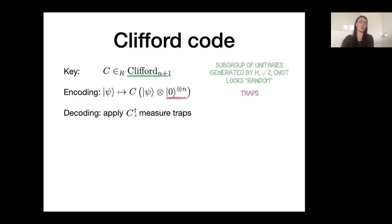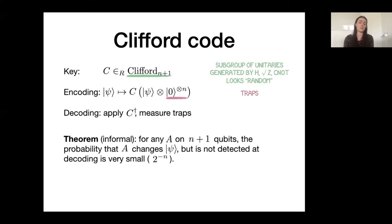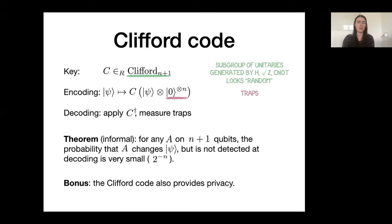The guarantee that the Clifford code gives us is exactly this: for any attack A on the authenticated state of n plus one qubits, the probability that A changes the data psi but is not detected — that it still produces an all-zero measurement — is very small, inverse exponential in the security parameter n. This is due to the structure of the Clifford group, which effectively randomly distributes an attack across all qubits including the traps. As a bonus, the Clifford code also provides privacy — it is also an encryption scheme. In fact, a quantum authentication code is necessarily also a quantum encryption scheme.